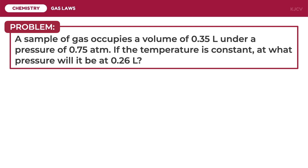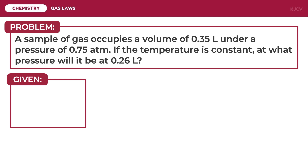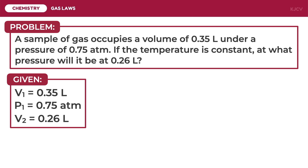For the second problem: a sample of gas occupies a volume of 0.35 liters under a pressure of 0.75 atmosphere. If the temperature is kept constant, at what pressure will it occupy 0.26 liters? The given quantities are: 0.35 liters is the initial volume, 0.75 atmosphere is the initial pressure, and 0.26 liters is the final volume. We are asked to solve for the final pressure.